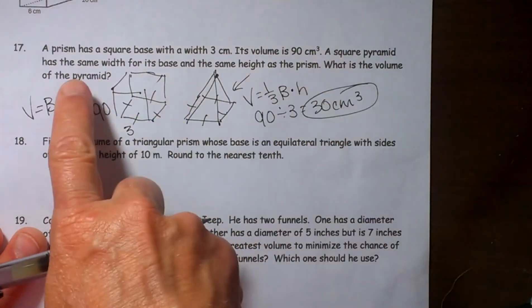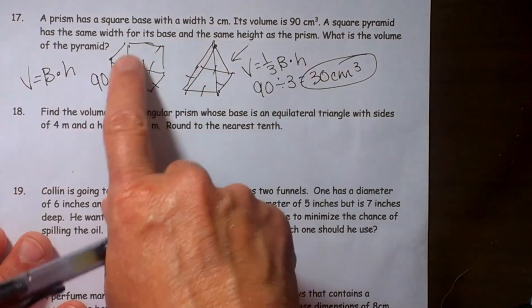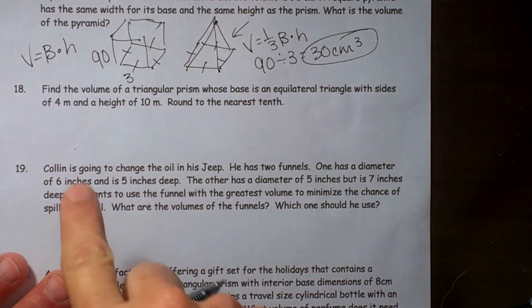And that would be the answer. The volume of the pyramid is only 30 cubic centimeters. It is one third of the volume of its related pyramid. Okay, let's look at number two.